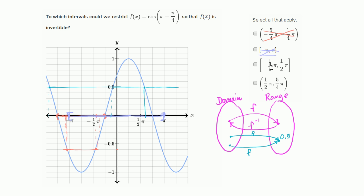The third choice is from -π/2 to positive π/2. This one is interesting. If I apply a horizontal line over that domain, I do intersect the function twice. So I have two members of this domain mapping to the same element of the range, and I can rule that one out as well.